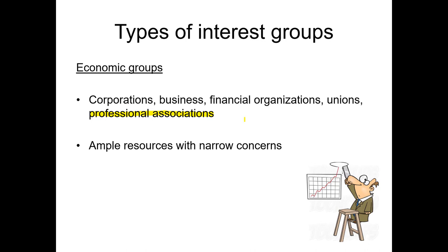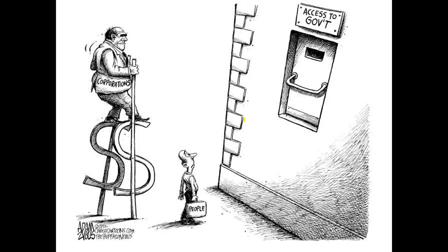The economic interest groups have ample resources because they are collecting revenues from whatever product or service they are selling, making a profit, and their concerns are with increasing that revenue and maximizing that profit, or maximizing shareholder value. They have lots of resources to focus on those fairly narrow concerns and, by far, dominate the interest group system. That's also a lot of ammunition for political cartoonists looking at the disparity between the average working person and the advantages that corporations have in their access to government.